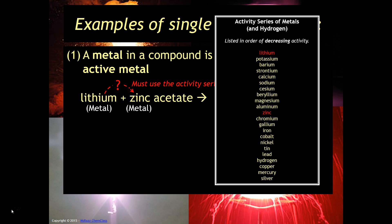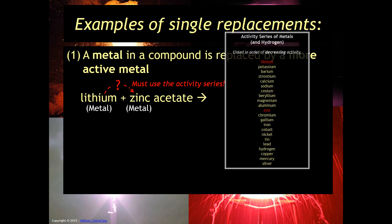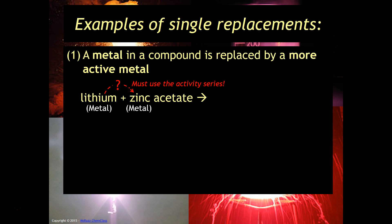So the activity series looks something like this, where it's in order of decreasing activity. So that means the thing that's at the top is the most reactive. Basically lithium has the ability to replace everything below it. And since lithium is all the way at the top and zinc is right here in the middle, this reaction can occur because lithium is more reactive than zinc. So therefore, what you will get is zinc plus lithium acetate. Because lithium is more reactive than zinc, this reaction would occur.